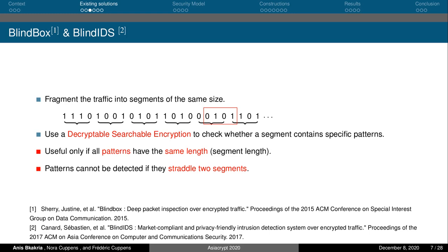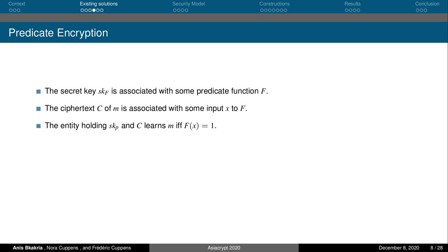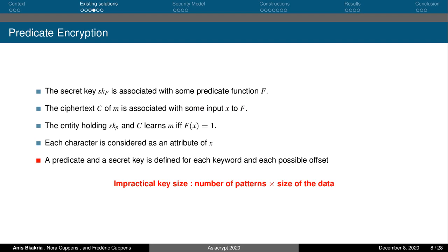Predicate encryption can also be adapted to allow pattern matching on encrypted data. At a very high level, the idea consists of considering each symbol in a detection pattern as an attribute of a predicate. Then, to allow finding the patterns anywhere in the encrypted data, a predicate will be assigned to each pattern and to each possible position in the data to be analyzed. So we will end up requiring a secret key of size linear to the size of the traffic to be analyzed.